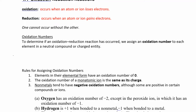What are the rules for assigning oxidation numbers? If you have an element in its elemental form, the oxidation number is going to be zero. For example, the elemental form of magnesium is just solid magnesium — that has an oxidation number of zero. And hydrogen in its elemental form is H2, which also has an oxidation number of zero.